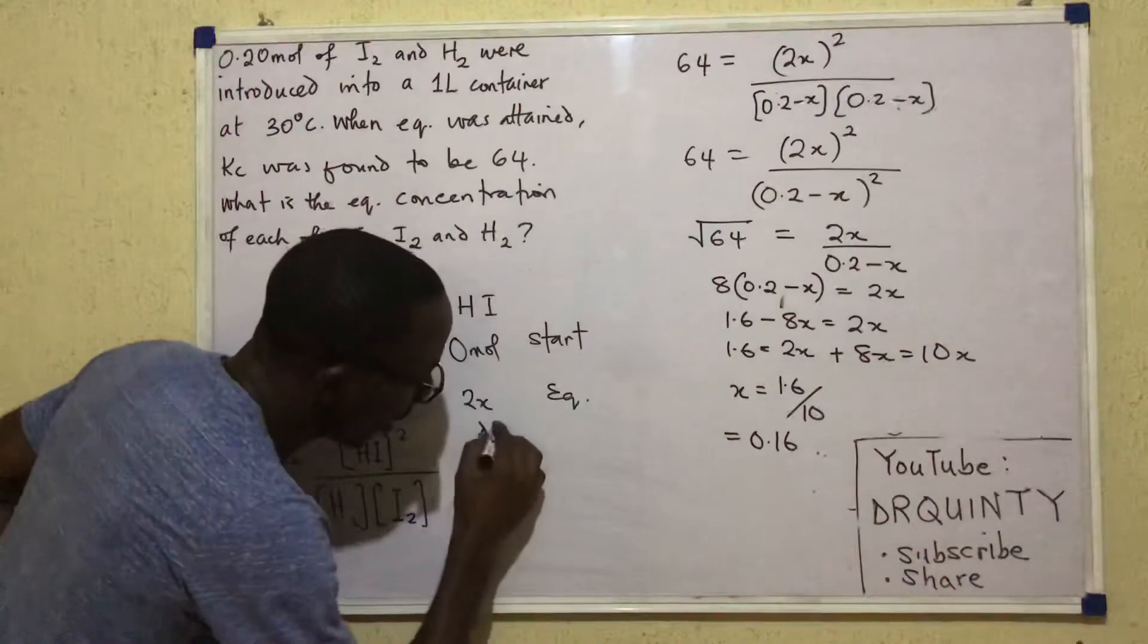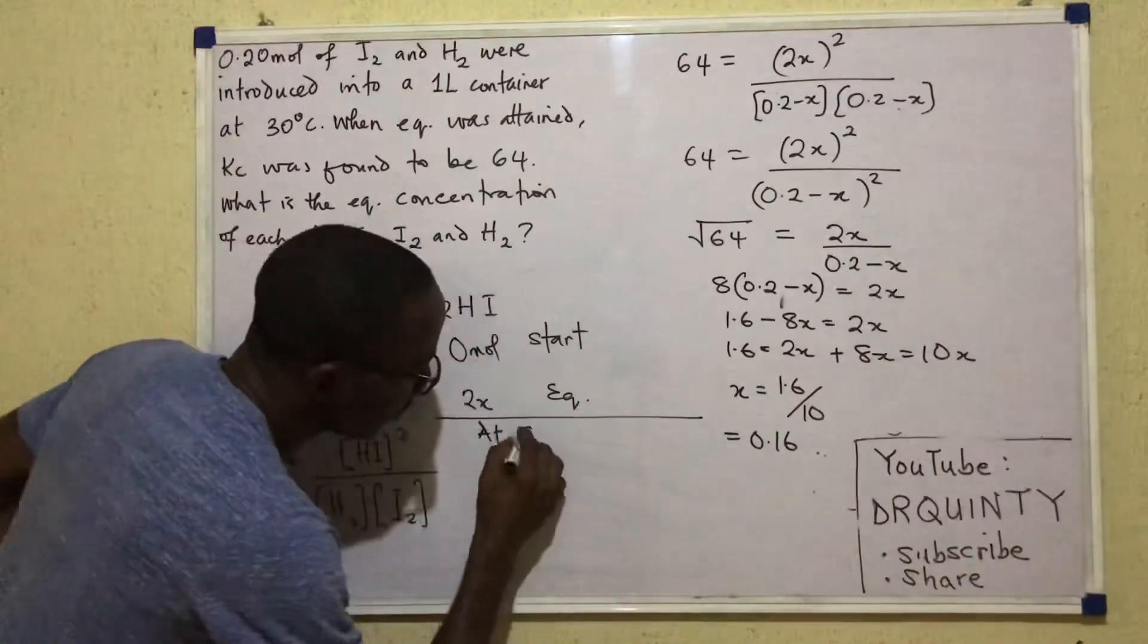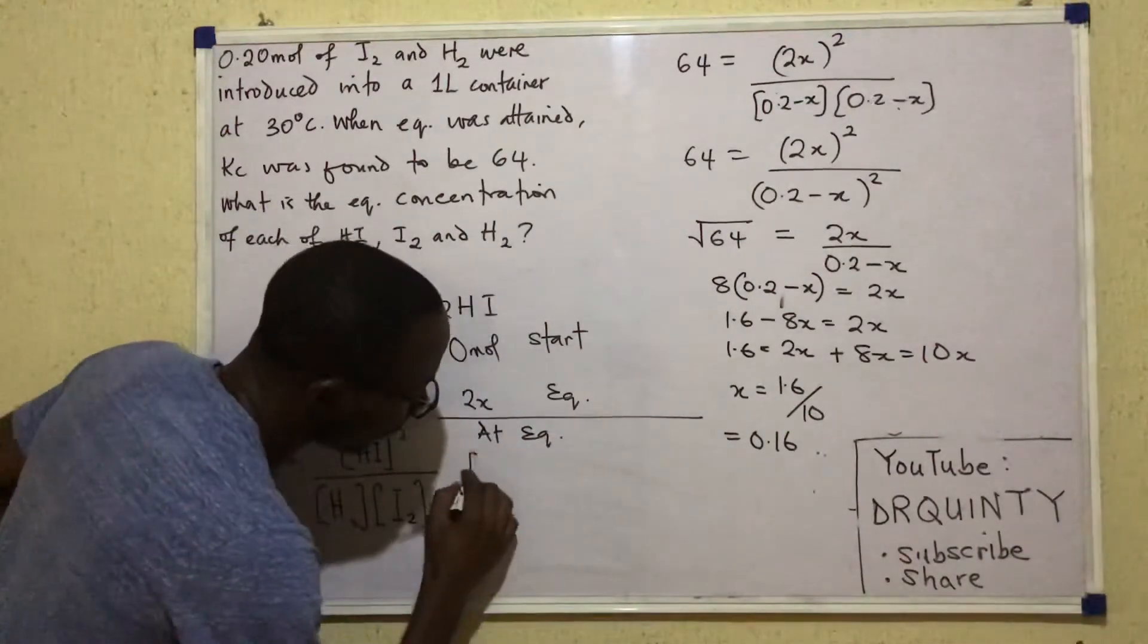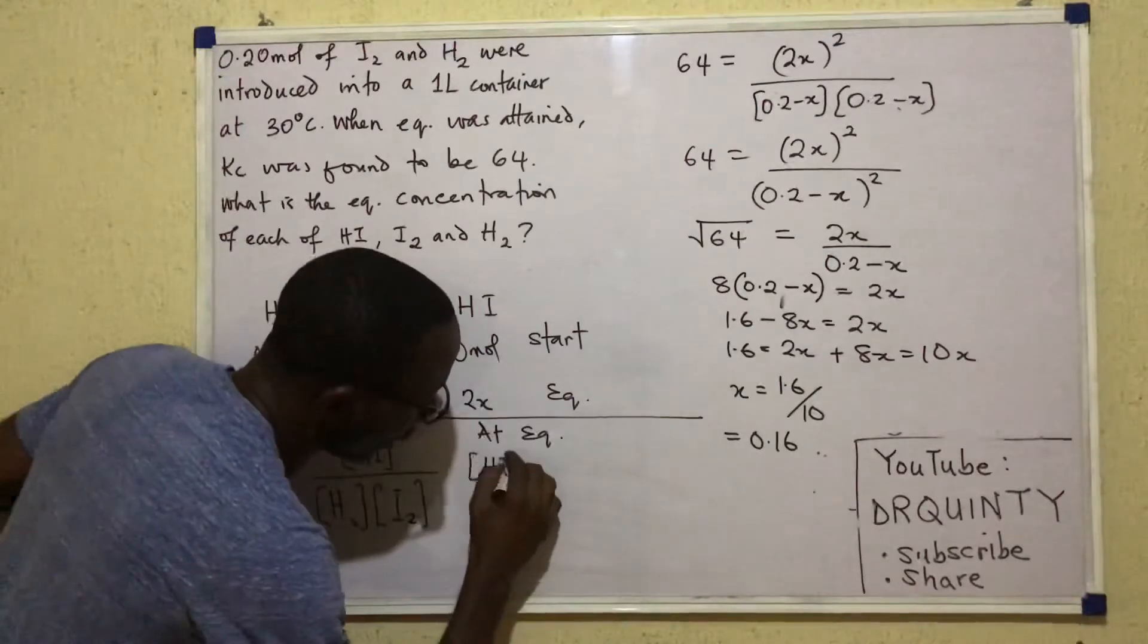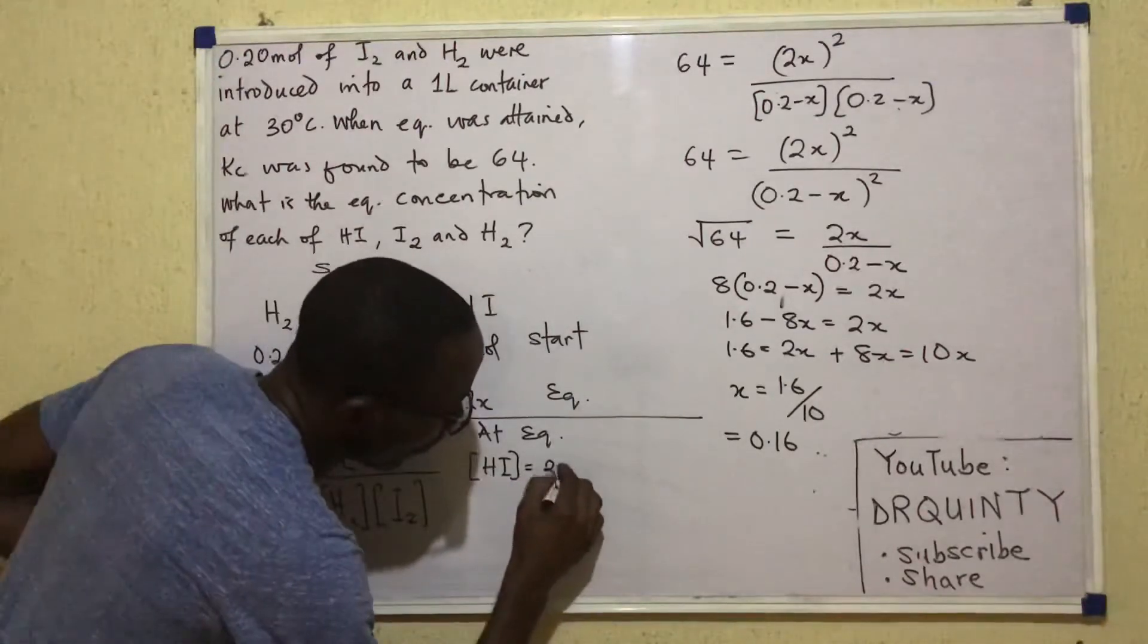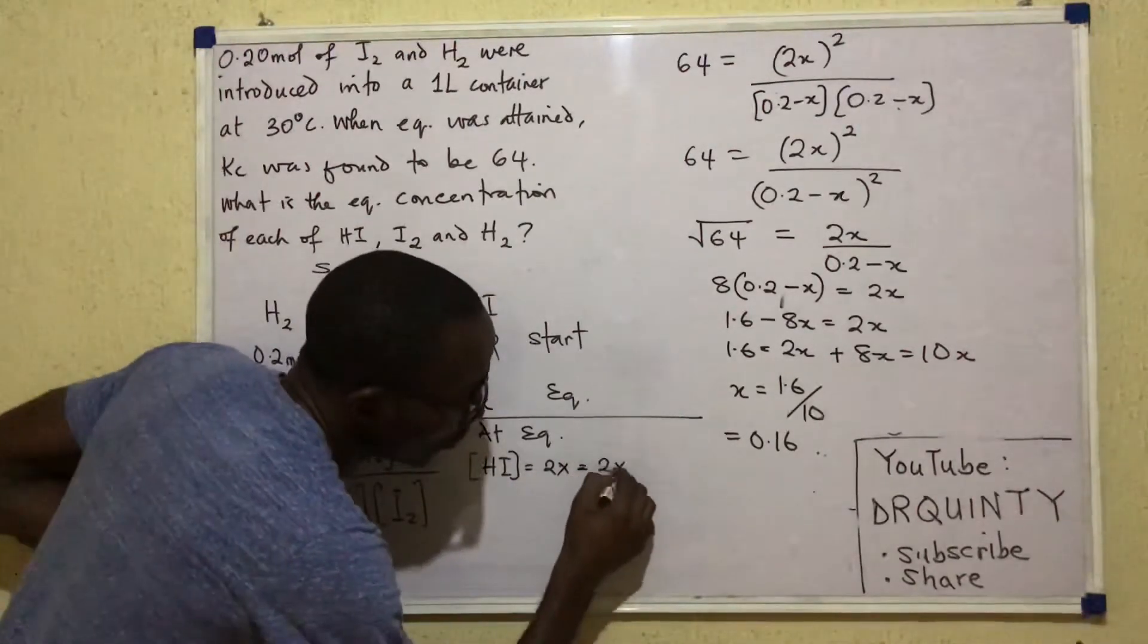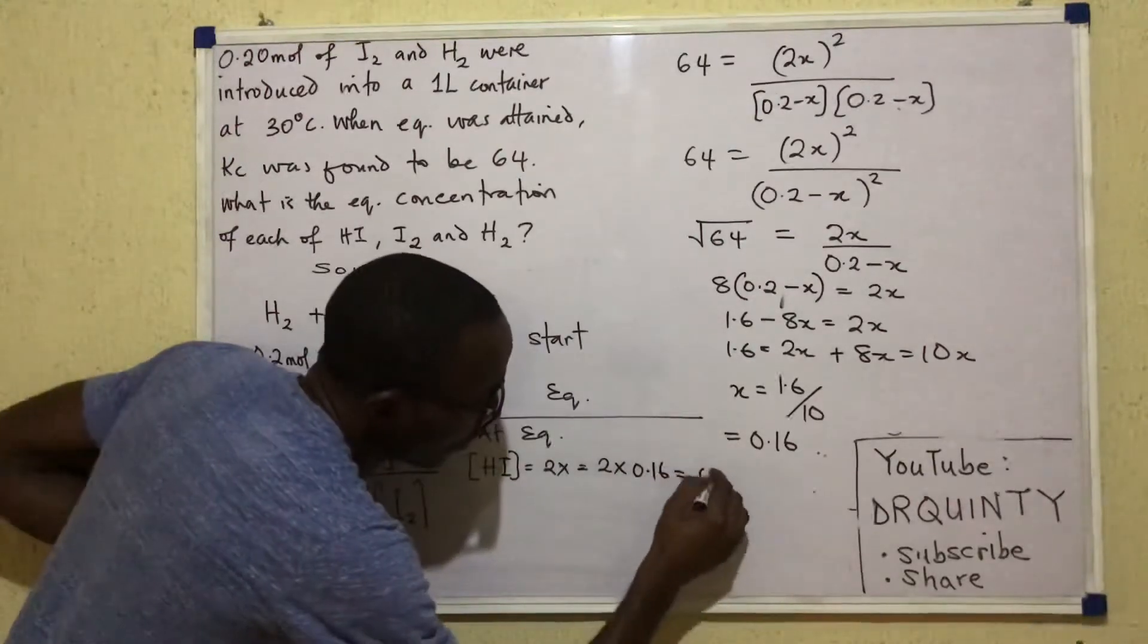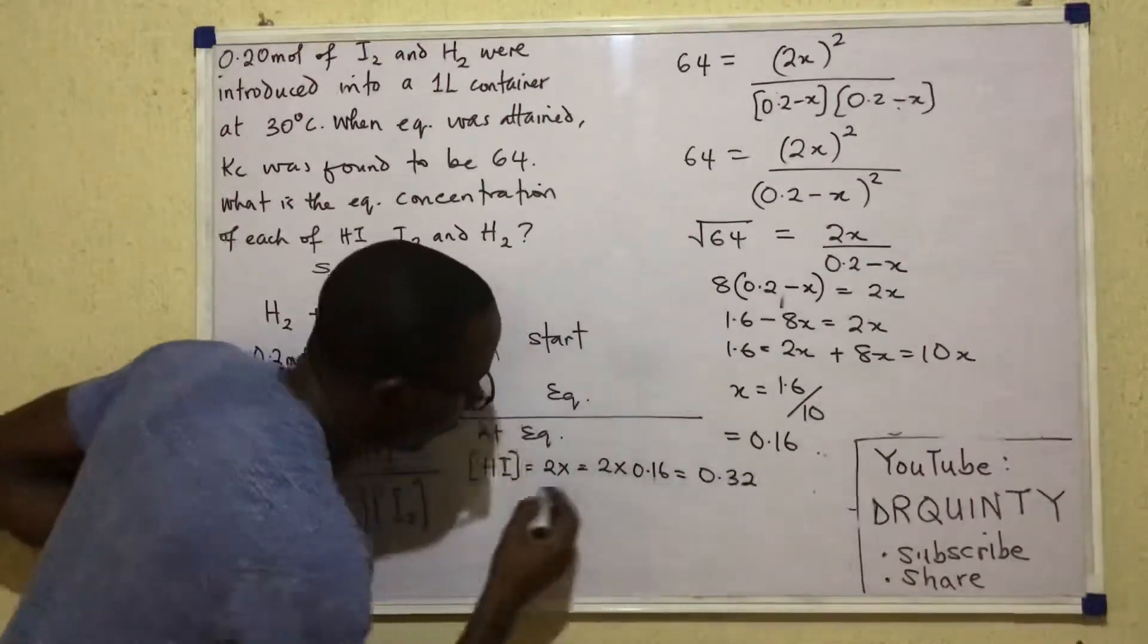So I'm going to say now, this is my answer. At equilibrium, concentration of HI equals 2X which is 2 times 0.16 and that's 0.32.